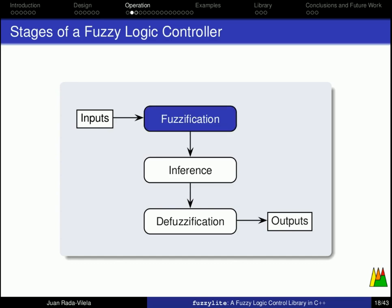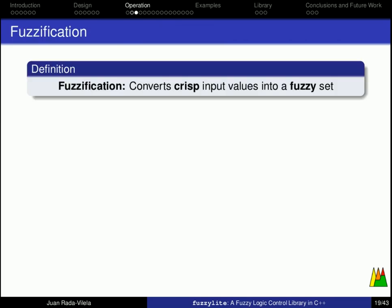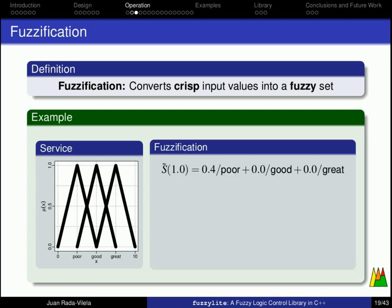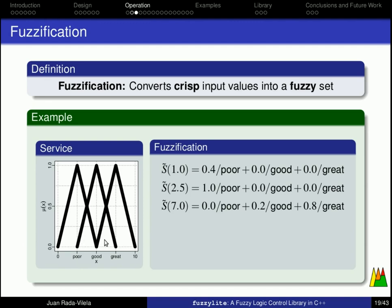The first stage is fuzzification, and it basically converts the crisp values into a fuzzy set. You should know already how to do this, so, for example, we have the input variable service, and fuzzification is basically defining the fuzzy set. So, for a value of 1.0, for a ranking of 1.0, we say that the associated term is poor, with a degree of 0.4. For a value of 2.5, we say it is 1.0 poor. For 7.0, somewhere around here, it is 0.2 good and 0.8 great. So, we define the fuzzy sets as the sum of the membership functions for value x over the label of the term.